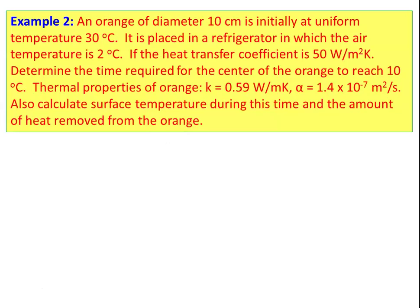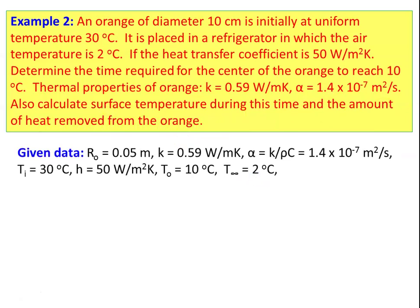Example number 2: An orange of diameter 10 cm, initially at a uniform temperature of 30°C, is placed in a refrigerator where the air temperature is 2°C. The heat transfer coefficient is 50 W/m²·K. Determine the time required for the center of the orange to reach 10°C. Thermal properties: k = 0.59 W/m·K, α = 1.4 × 10⁻⁷ m²/s. Also calculate the surface temperature during this time and the amount of heat removed from the orange. Given: outer radius r_o = 0.05 m, T_i = 30°C, h = 50 W/m²·K, center temperature = 10°C, T_∞ = 2°C.